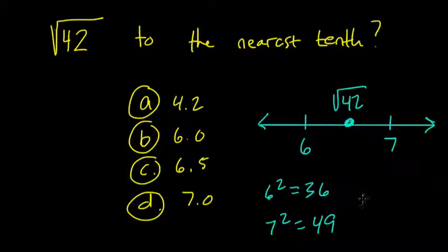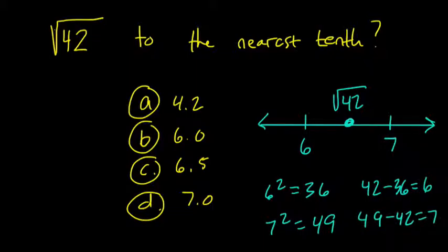And I notice that if I take 42 and I subtract 36 from it, I get 6. And if I take 49 and subtract 42 from it, I get 7. Which means that the distance between the square root of 42 and 6 and 7 is about equal. It's a little bit closer to 6, but it's pretty close to equal between 6 and 7. That's what we're finding here by subtracting.